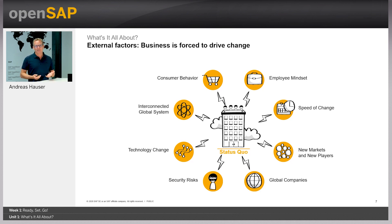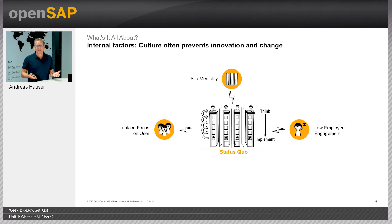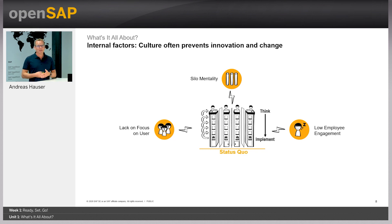But there are also internal factors within the company. Very often companies have a silo mentality — departments one, two, three don't really work together. There is a lack of focus on the end user, the people who use the products. There is also low employee engagement. This is also due to having multiple different people with different ages in the company — young people, older people — as well as diversity in mindsets and cultural backgrounds, all working together.